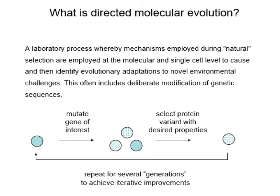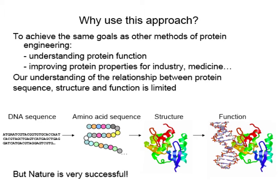Directed molecular evolution is a laboratory process whereby mechanisms employed during natural selection are used at the molecular and single-cell level to cause and then identify evolutionary adaptations to novel environmental challenges, often including deliberate modification of genetic sequences. You start with your gene of interest, make mutations, then do a selection to identify the variants with desired properties, and go through this process iteratively. Our understanding of the relationship between protein sequence, structure, and function is limited, and to predict folding and identify function from DNA is very challenging.